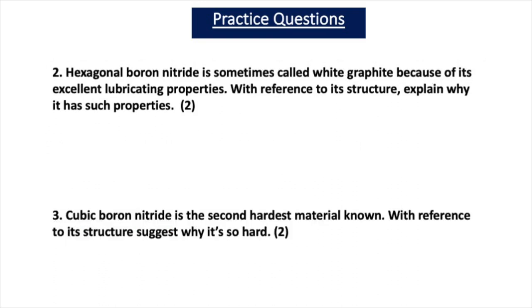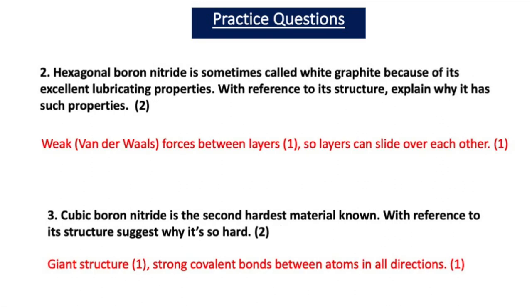Here are the next two practice questions. Question two states: hexagonal boron nitride is sometimes called white graphite because of its excellent lubricating properties. With reference to its structure, explain why it has such properties. This is a two mark question. If you said there are weak van der Waals forces between the layers, you get one mark. Therefore the layers can slide over each other — if you said that, you get the second mark.